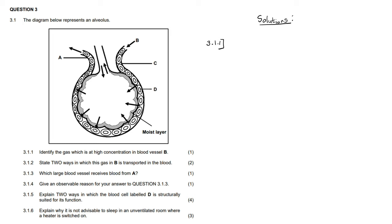Hello Grade 11s, welcome to Educate. Let us do a little bit of practice on gaseous exchange. This question is taken from Grade 11 November 2023 Eastern Cape exam. We are answering question 3, which says the diagram below represents an alveolus. If you do not understand how gaseous exchange occurs at the alveolus, I strongly recommend you watch our video on gaseous exchange at the alveolus — the link will be in the description.